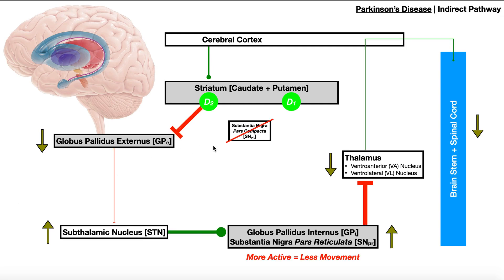Now let's take a look at the case of Parkinson's disease. What's the mechanism? It's progressive degeneration of the substantia nigra. The more of these cells that you lose, the less dopamine you're going to have to modulate the direct and the indirect pathway — and we're going to see that this substantia nigra is actually tremendously important.